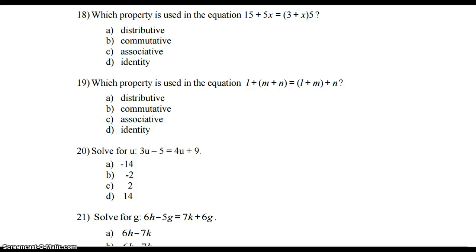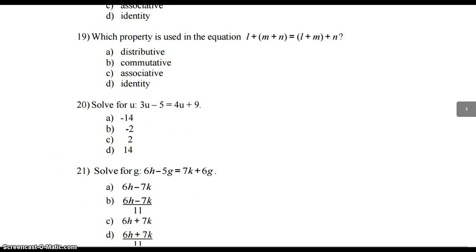And then number 20, lastly here, we're solving for u. You can choose which side to bring your best friends to, right? You want to get those u's together. I would subtract 3u, be left with negative 5. 4 minus 3u is 1u, or just u, and then plus 9. And then I would subtract 9 on both sides to get u all by itself. So we get u to be negative 14. And you can always go back and plug that in to see if it makes sense. That's all I've got for you for this section.